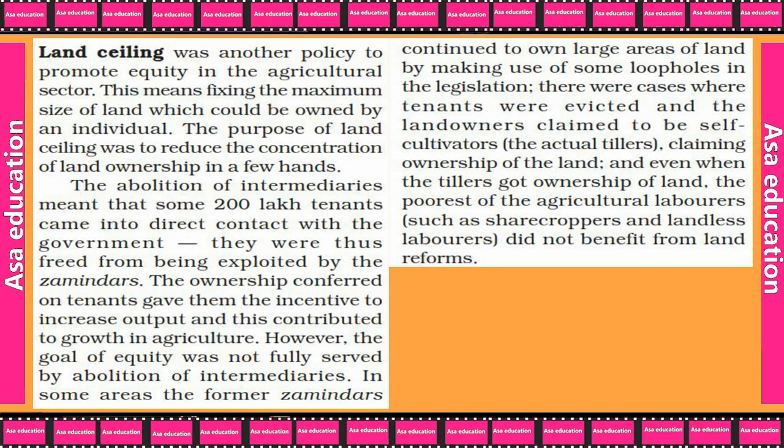However, the goal of equity was not fully served by the abolition of intermediaries. In some areas, the former zamindars continued to own large areas of land by making use of loopholes in the legislation. There were cases where tenants were evicted and land owners claimed to be self-cultivators. Even when tillers got ownership, the poorest agricultural laborers such as sharecroppers and landless laborers did not benefit from land reform.